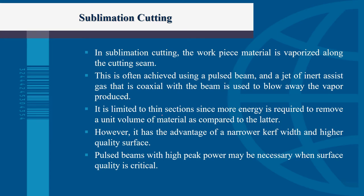In sublimation cutting, the work piece material is vaporized along the cutting seam. This is often achieved using a pulsed beam, and a jet of inert assist gas coaxial with the beam is used to blow away the vapor produced. This method is limited to thin sections since more energy is required to remove any given volume of material. However, it has the advantage of a narrow kerf — the gap created by the cut. A pulsed beam with high peak power may be necessary when surface quality is critical.